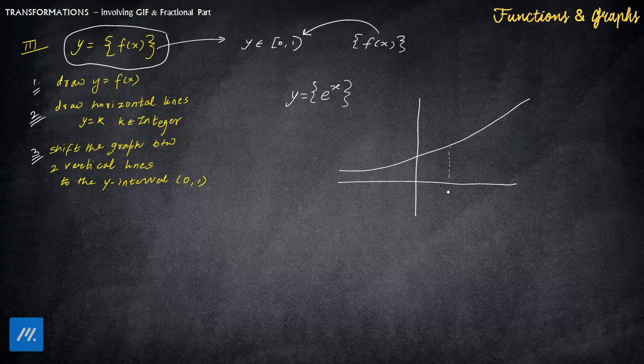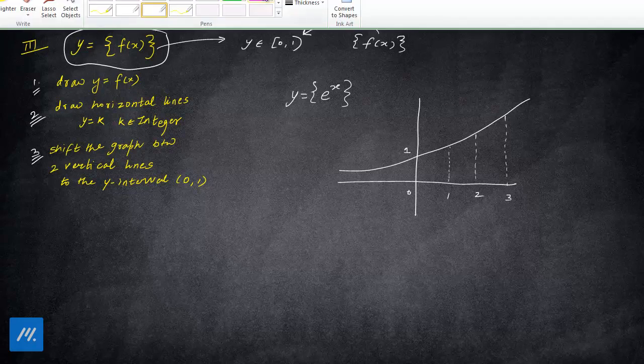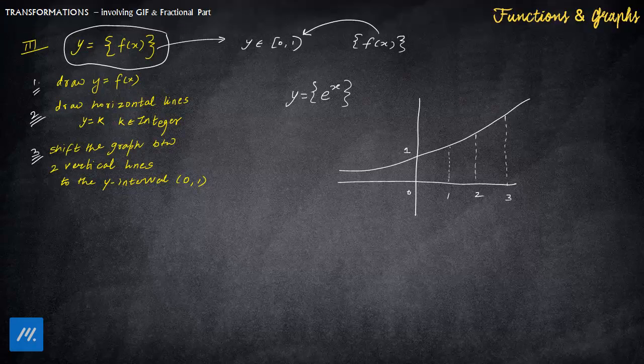This is let's say supposedly 1, supposedly this is 2, this value is 3, and so on. And this is 0. At 0 we know the value is 1. So now what you have to do is draw horizontal lines. So this is the first horizontal line y = 0 that is already drawn. Then the next horizontal line will come out to be y = 1 line. This is y = 1 line.